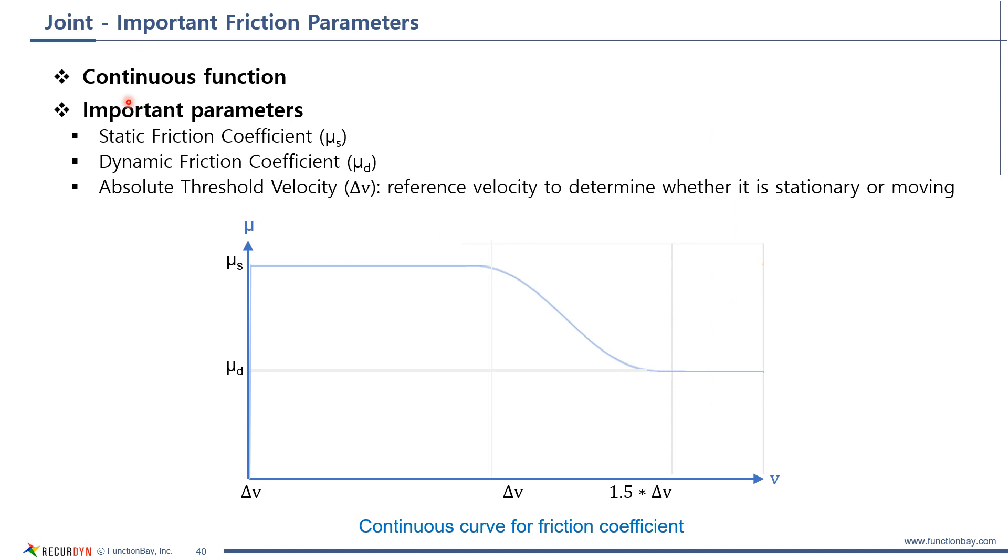The friction is discontinuous in reality. But for simulation, it is expressed as a continuous function. And these three parameters are important: static friction coefficient, dynamic friction coefficient, and absolute threshold velocity. Absolute threshold velocity is the reference velocity to determine if it is stationary or moving. If the relative velocity between base body and action body is lower than this velocity, static friction coefficient is used. And if the relative velocity is 1.5 times faster than absolute threshold velocity, dynamic friction coefficient is used.